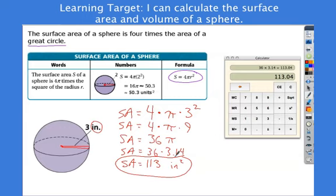For your quick check tonight, be careful. You'll see a sphere, and it'll say either find the volume or find the surface area. There are two different formulas here. Make sure you use the right one. Make sure you identify which one you're supposed to be solving for.